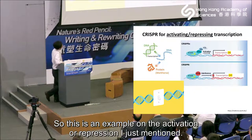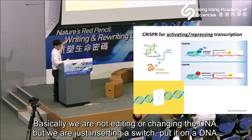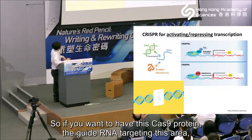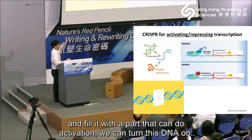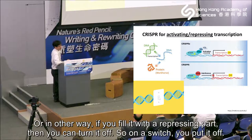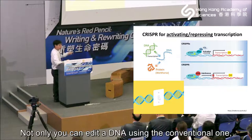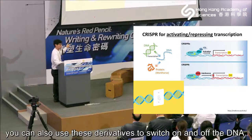Here is an example of activation and repression. We are not editing or changing the DNA — we are just inserting a switch on the DNA. If you have the Cas9 protein and guide RNA targeting a specific area, and fuse it with a part that can do activation, then you can turn this DNA on — just put a switch there and turn it on. Or if you fuse it with a repressing part, you can turn it off. So you can not only edit the DNA using the conventional approach, you can also use these derivatives to do the switching on and off of the DNA.